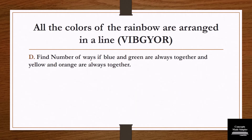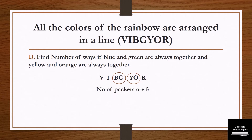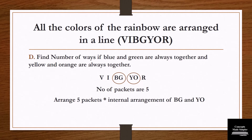The next question: find the number of ways if blue and green are always together and yellow and orange are always together. The solution: keep blue and green together and yellow and orange together, tying both with a string. Number of packets is 5. Arrange 5 packets and multiply by the internal arrangement of B-G and Y-O. So the solution is 5 factorial × 2 factorial × 2 factorial.